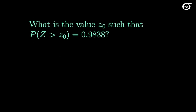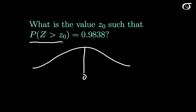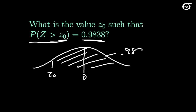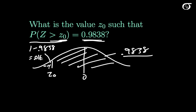What is the value of Z0 such that the probability Z is greater than Z0 is 0.9838? Let's draw that out. Here we have 0 in the middle, and the probability Z is greater than Z0 is 0.9838, which means the area to the right of Z0 is 0.9838, so Z0 has to be over to the left. We can't directly look that up because our table gives areas to the left, so we convert: the area to the left is 1 minus 0.9838, which is 0.0162.